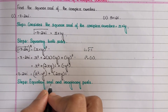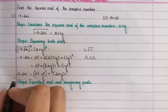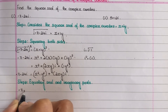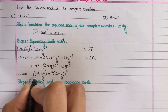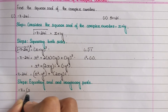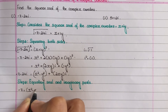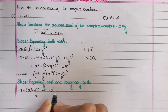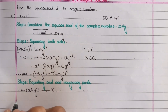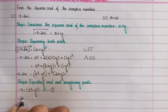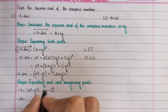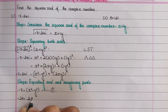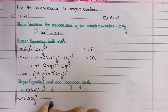Step 3: equating real and imaginary parts. LHS real part: minus 7 equals RHS real part: x² minus y² — this is equation number 1. LHS imaginary part: minus 24 equals RHS imaginary part: 2xy — this is equation number 2.